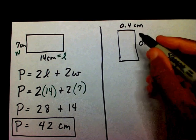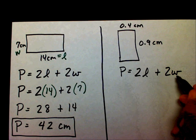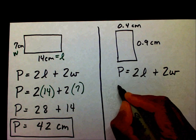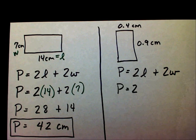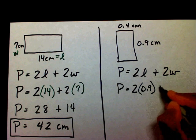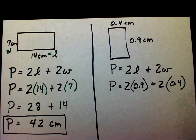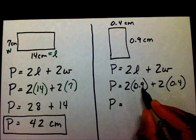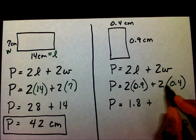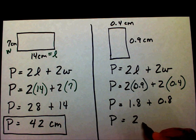Let's try another one. P equals 2L plus 2W. Always write down your formula — that way you won't miss any variable. So P equals 2 times the length, which is 0.9, plus 2 times the width, which is 0.4. So P equals 2 times 0.9, which gives me 1.8, plus 2 times 0.4, which gives me 0.8. The perimeter is going to be 2.6 centimeters.